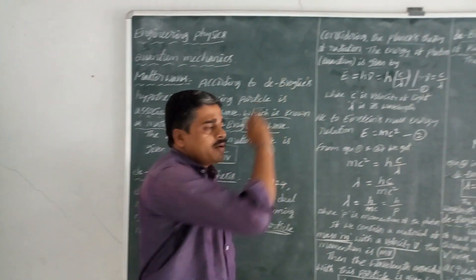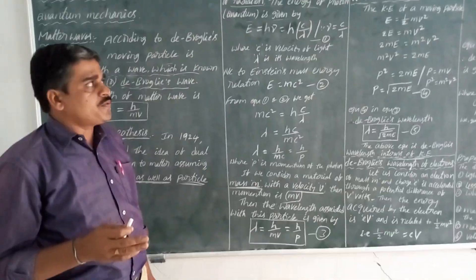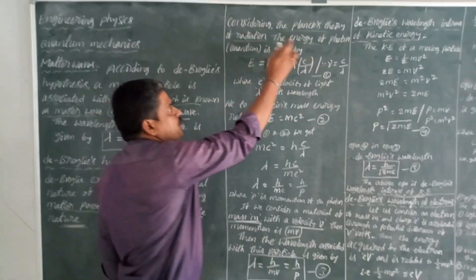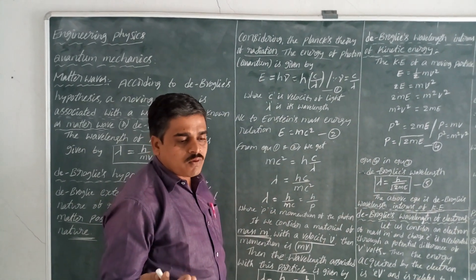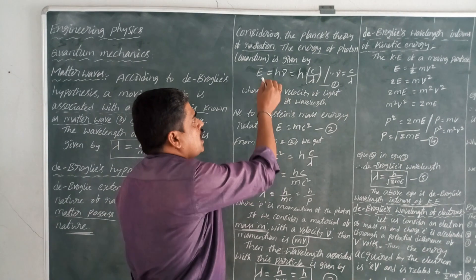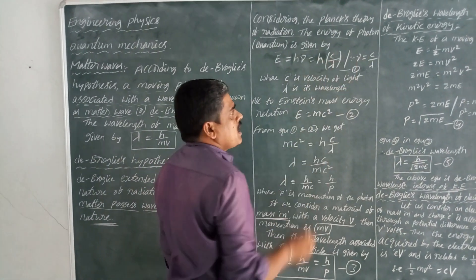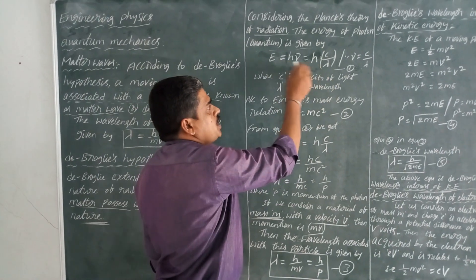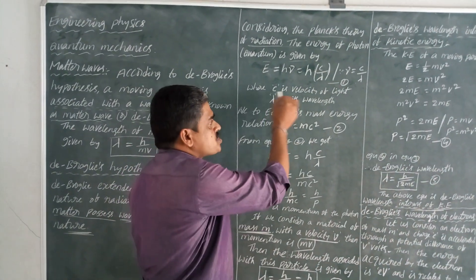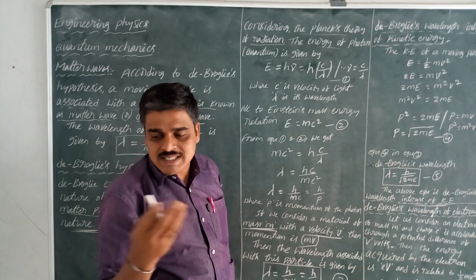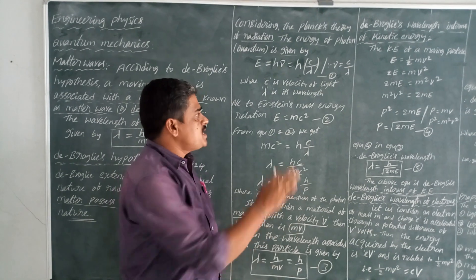Considering Planck's theory of radiation, the energy of a photon or quantum is given by E is equal to h nu. Since nu is equal to c by lambda, we can write E is equal to hc by lambda, where c is the velocity of light and lambda is its wavelength.